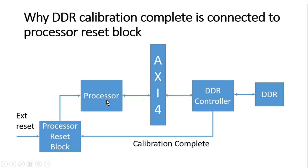In that case, the AXI interconnect or processor can go into a hang state, which can be very dangerous. Even after DDR calibration completes and DDR becomes active, by that time the system will be in a useless state. That is the reason it is very important to keep the processor in reset until DDR calibration is complete. When calibration completes, the calibration complete signal goes high, it releases the processor reset, and thereafter the processor starts reading DDR memory and everything runs smoothly.